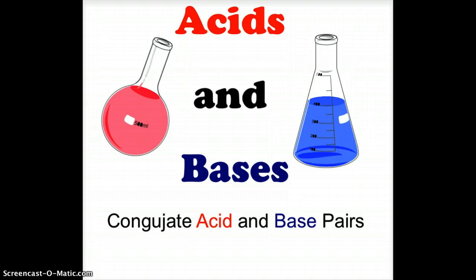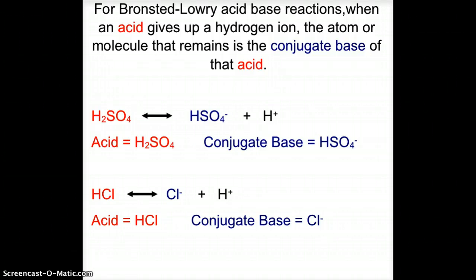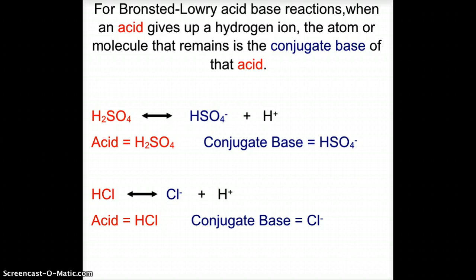Let's look at acids and bases from the Bronsted-Lowry perspective and we're going to look at what are called the conjugate acid and base pairs. When we're looking at Bronsted-Lowry acid-base reactions, when an acid gives up a hydrogen ion, the atom or molecule that remains is called the conjugate base of that acid. We have two examples: sulfuric acid H₂SO₄, when it donates a hydrogen, leaves HSO₄⁻, which is the conjugate base. With hydrochloric acid HCl, when the H is given up, the Cl⁻ chloride ion that remains is the conjugate base.